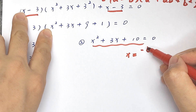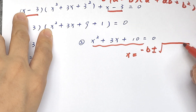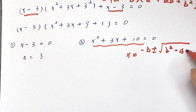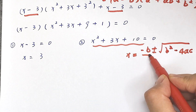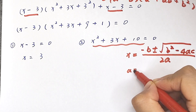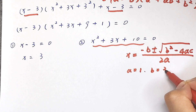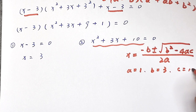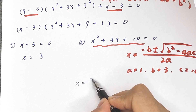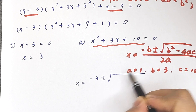For case two, we use the quadratic formula: x equals negative b plus or minus square root of b squared minus 4ac, all over 2a. Here a equals 1, b equals 3, and c equals 10.